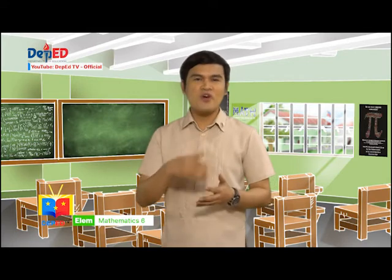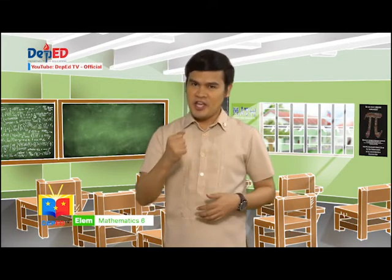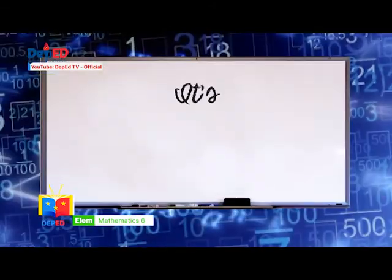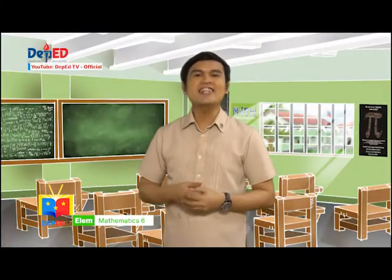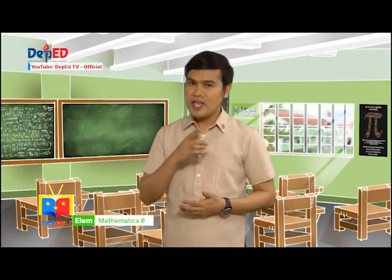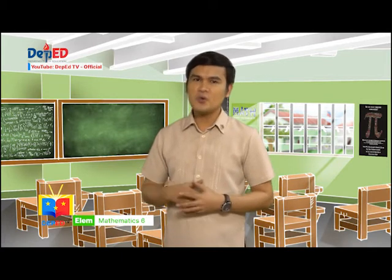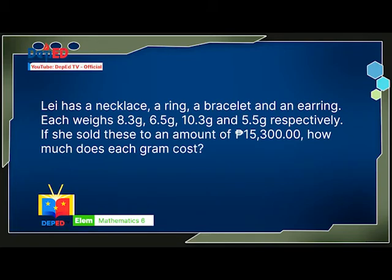And now for our final activity. Brace yourselves — it's Matematas time! Read and analyze the problem carefully, then choose the letter of the best answer. Lay has a necklace, a ring, a bracelet, and earrings. Each weighs 8.3 grams, 6.5 grams, 10.3 grams, and 5.5 grams respectively. If she sold these for a total of 15,300 pesos, how much does each gram cost?